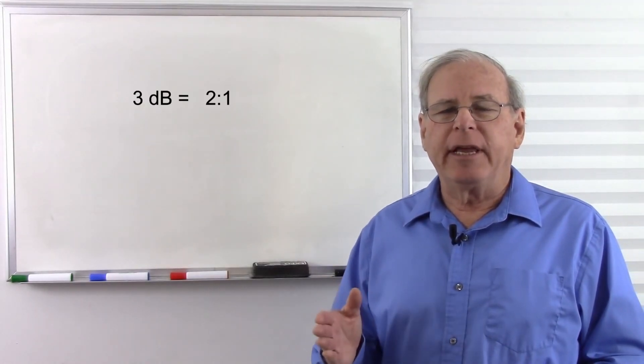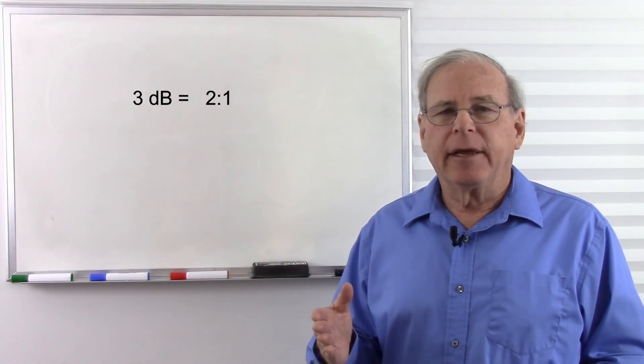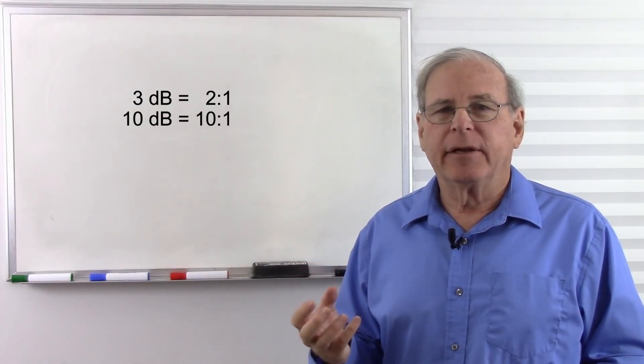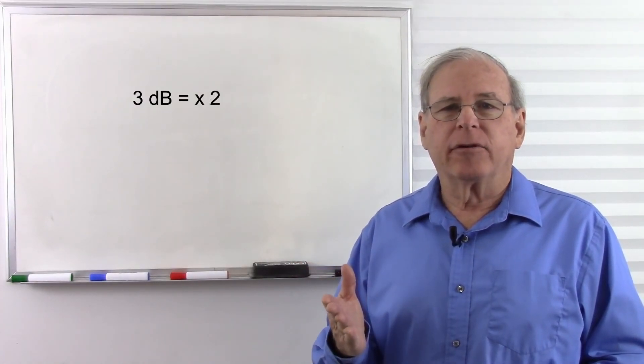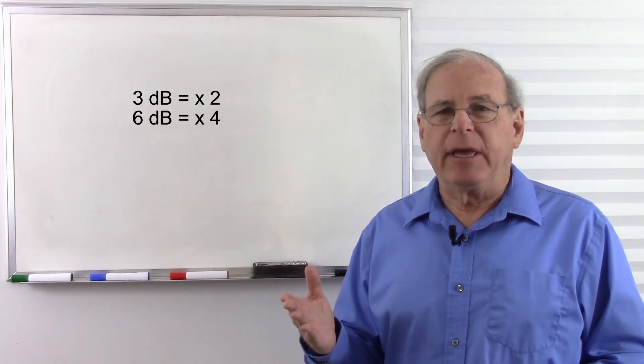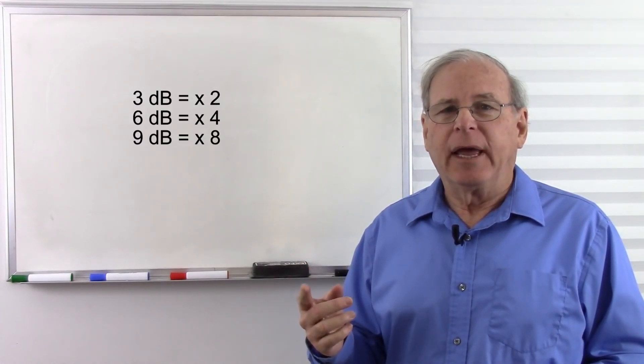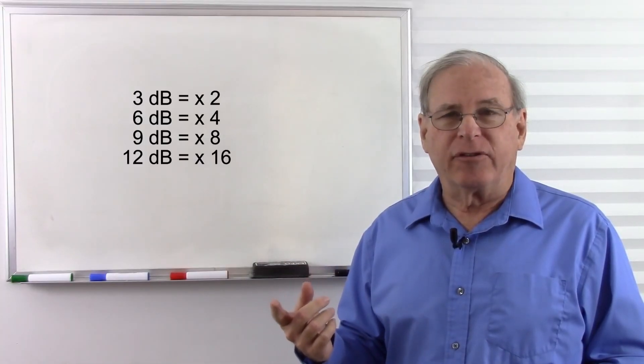So every time we add 3 dB, we are doubling, and every time we add 10 dB, we are multiplying by 10. So if we add 3 dB that's doubling, 6 dB is quadrupling, 9 dB is 8 to 1, 12 dB is 16 to 1.